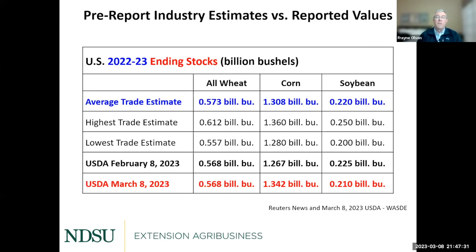Let's start with wheat. USDA left all of the numbers for wheat — both the production and the consumption side — identical to last month. So if you compare February numbers with March numbers, you'll see they're exactly the same. The average trade estimate was looking for slightly higher inventory numbers, primarily because of the expectation we might see a slight cut in exports, but that didn't really happen.